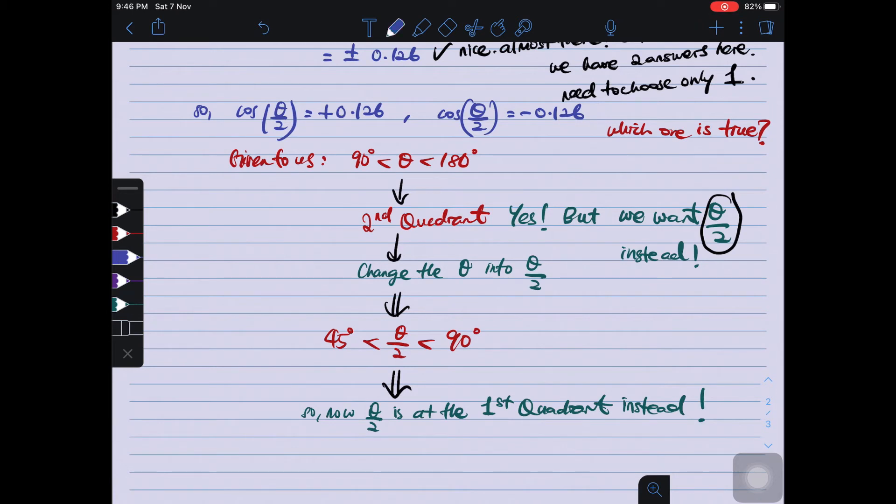So now, my θ/2 is at the first quadrant. Therefore, which one is suitable? Which one is my answer? My answer is... Of course, first quadrant is everything is positive. Therefore, the answer is cos θ/2 equals to positive 0.126. Only the positive value.